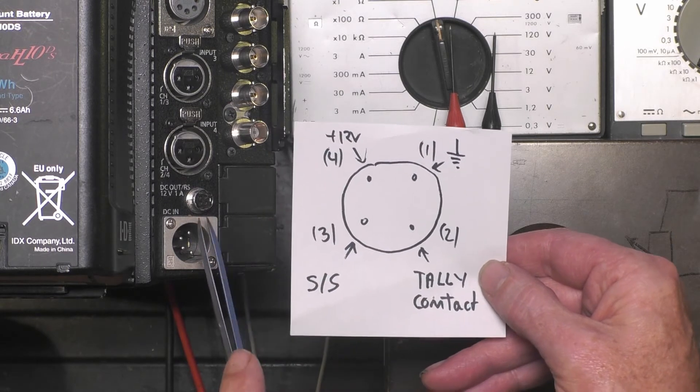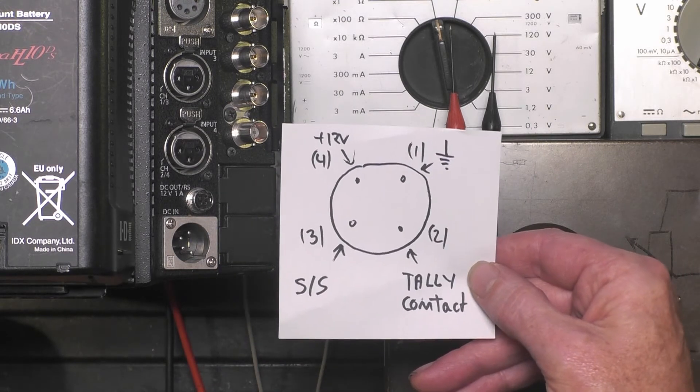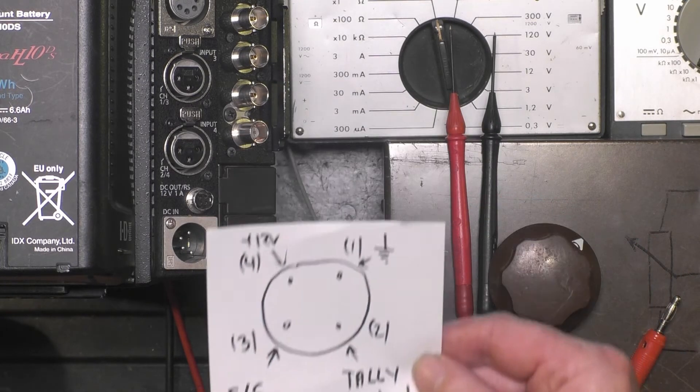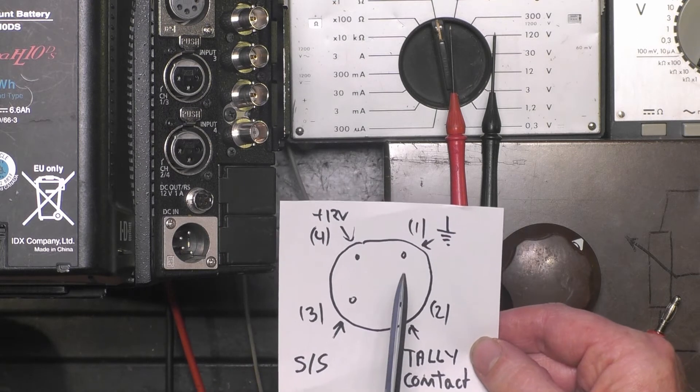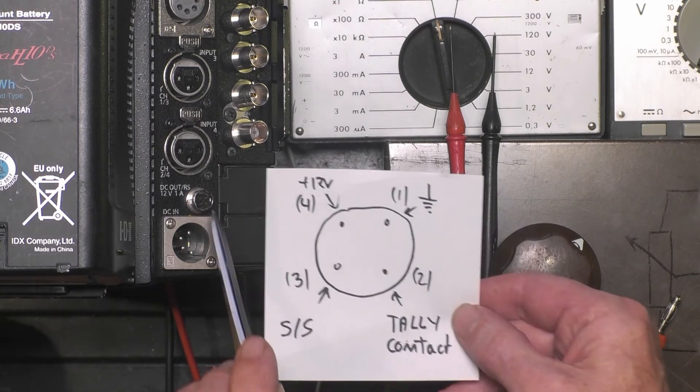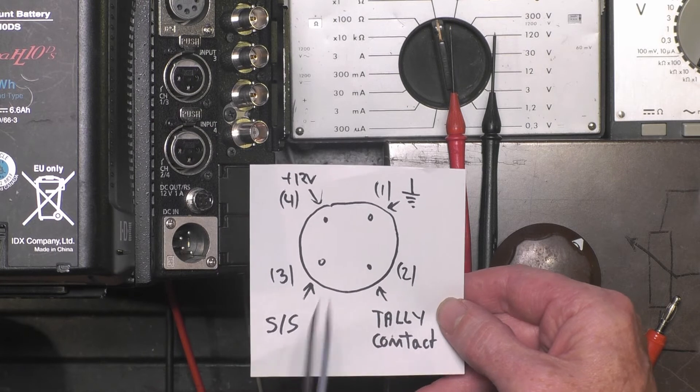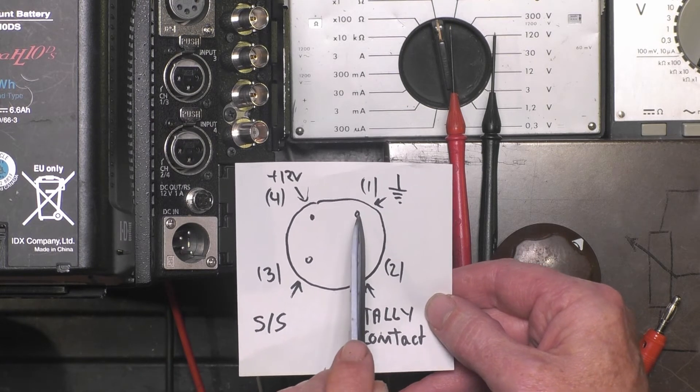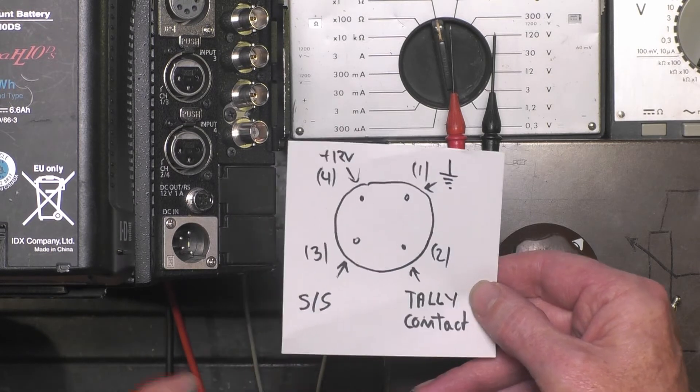So let us first find pin 1. In this case I'm very sure this pin is connected to the ground because it's this model of Varicam. But if you're not sure, if you have another kind of camcorder, maybe you must first find pin 1 to be sure.